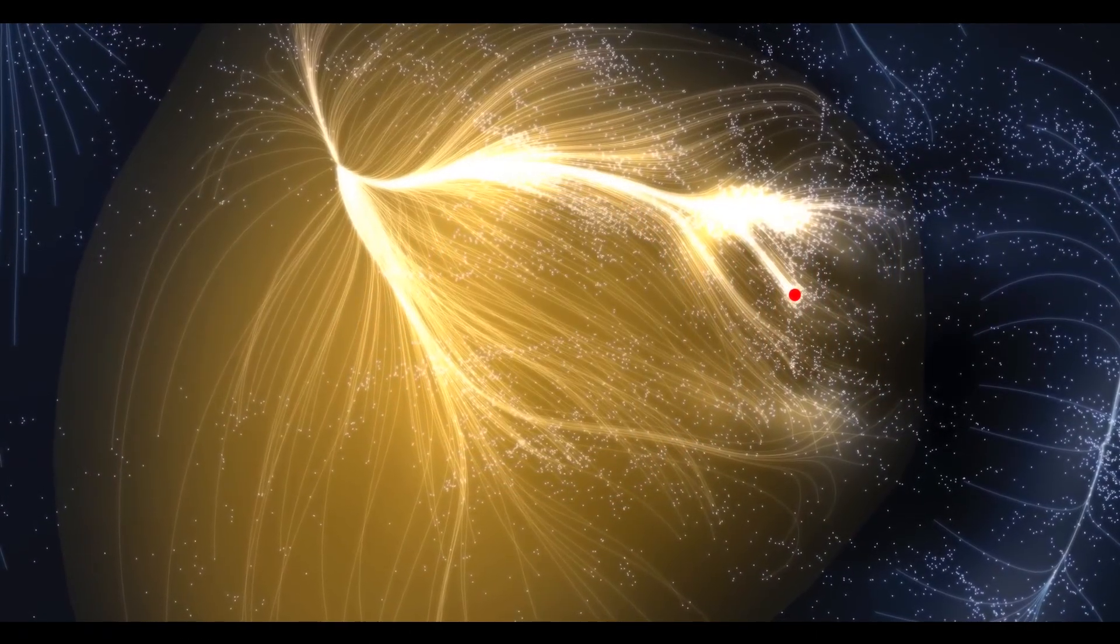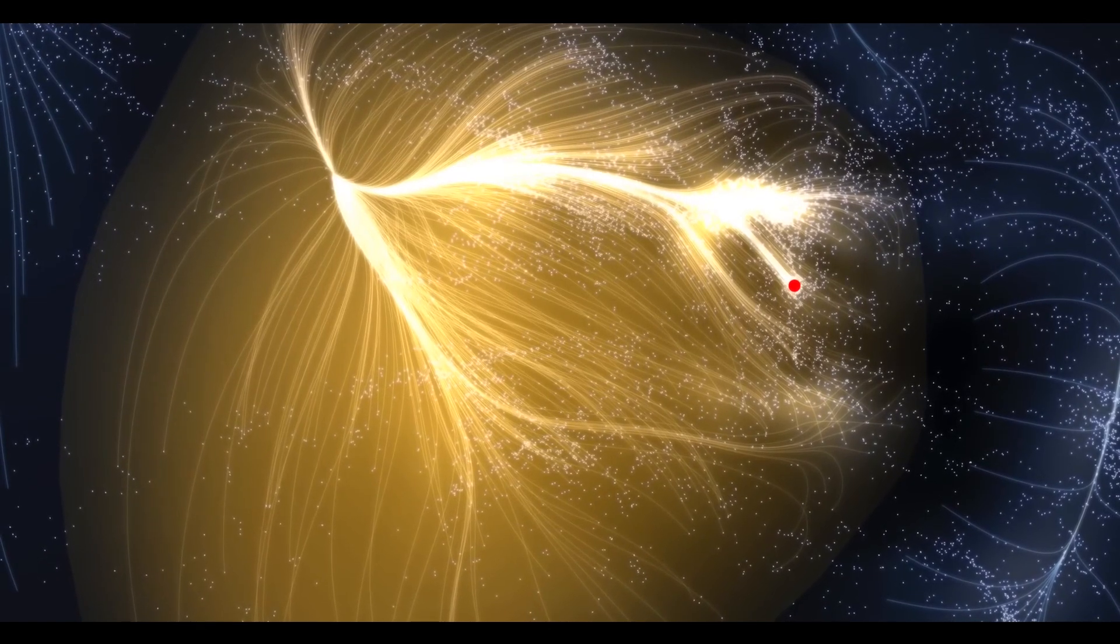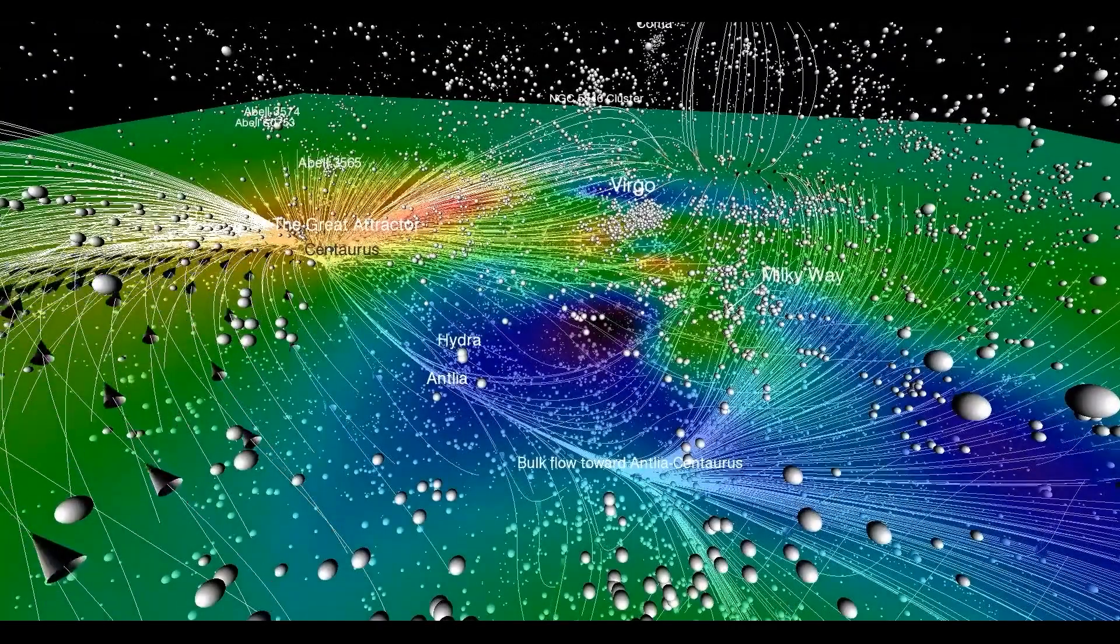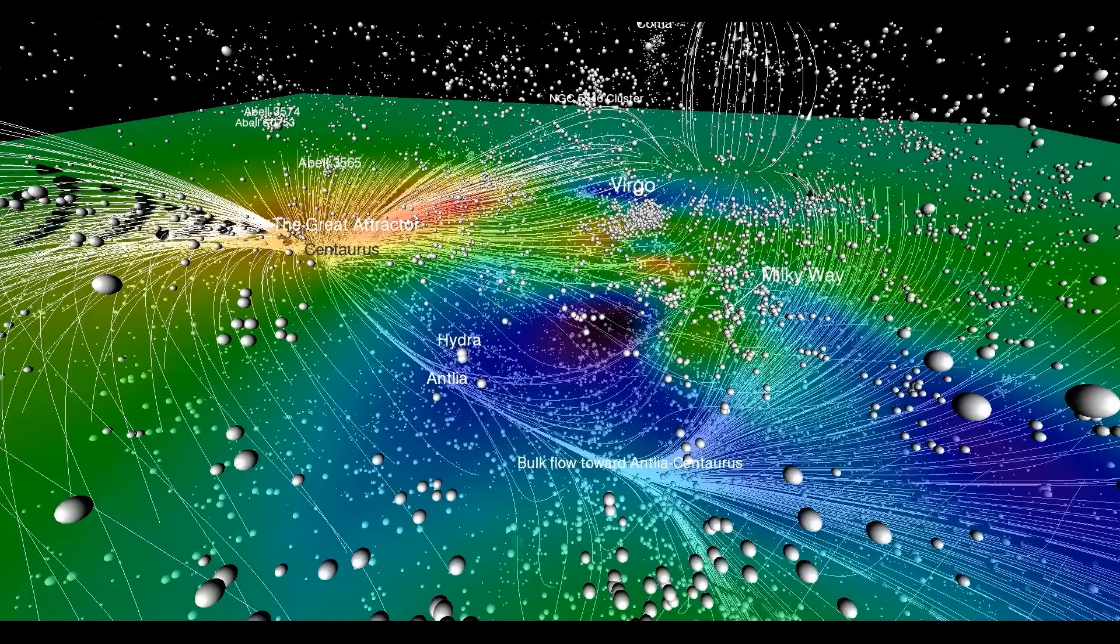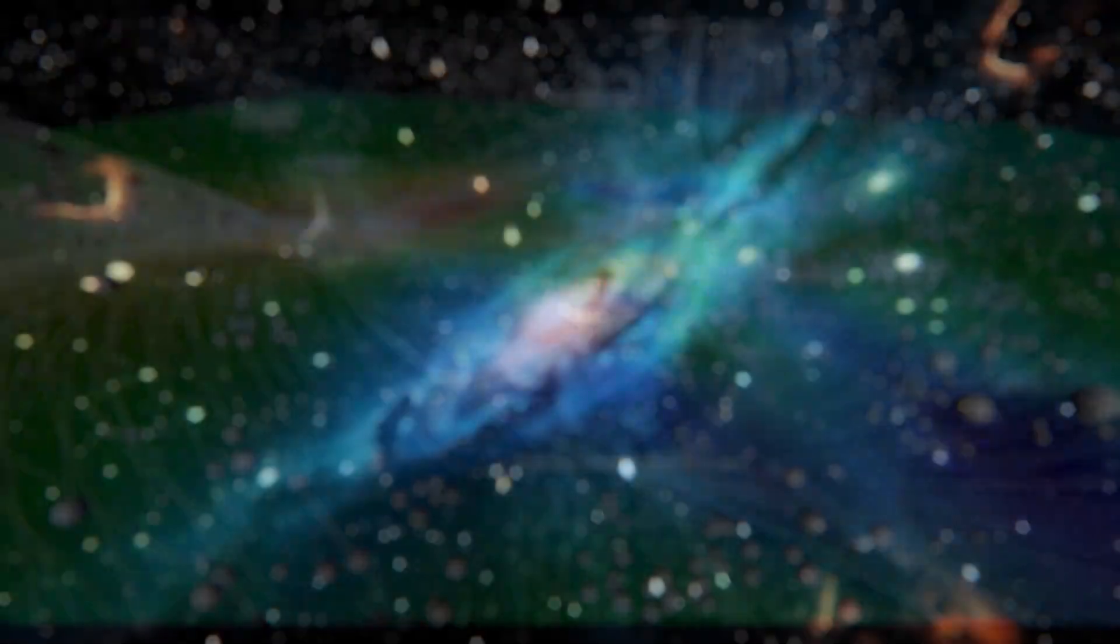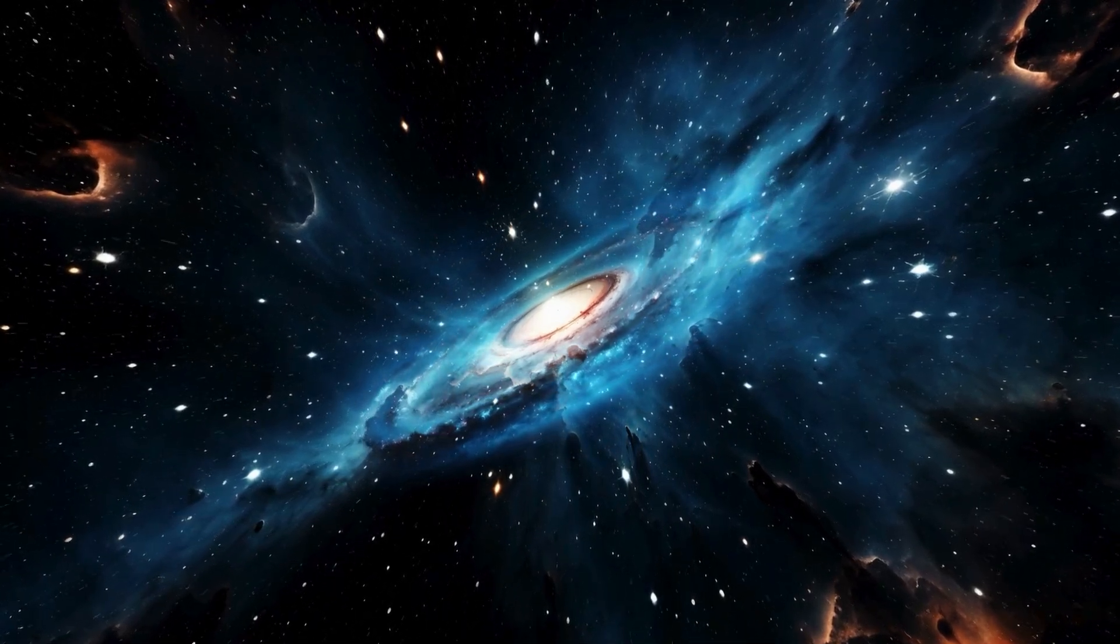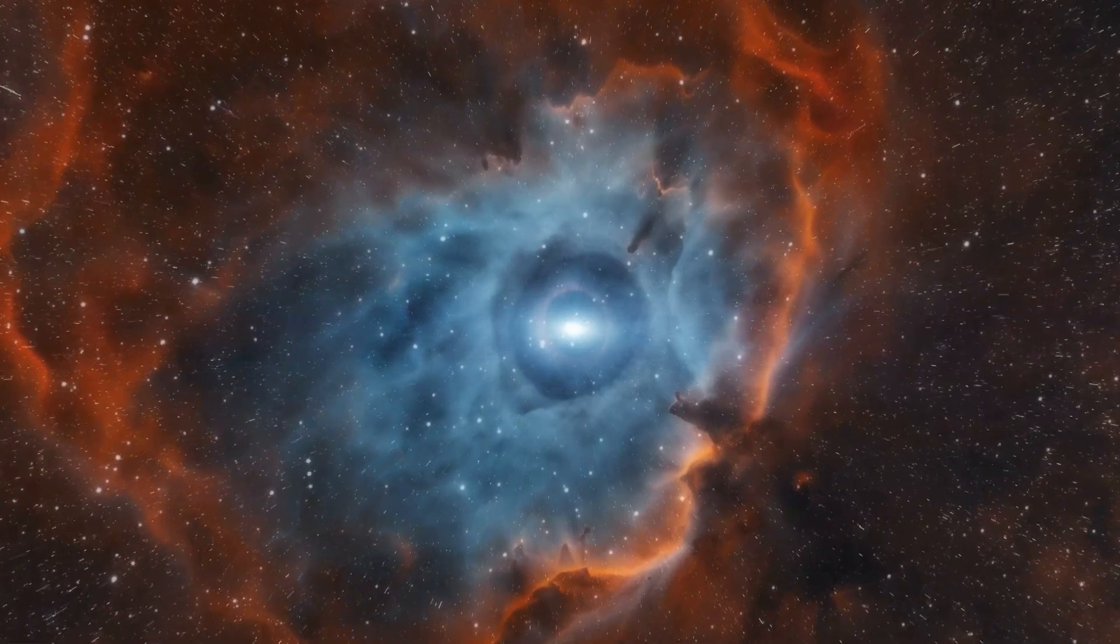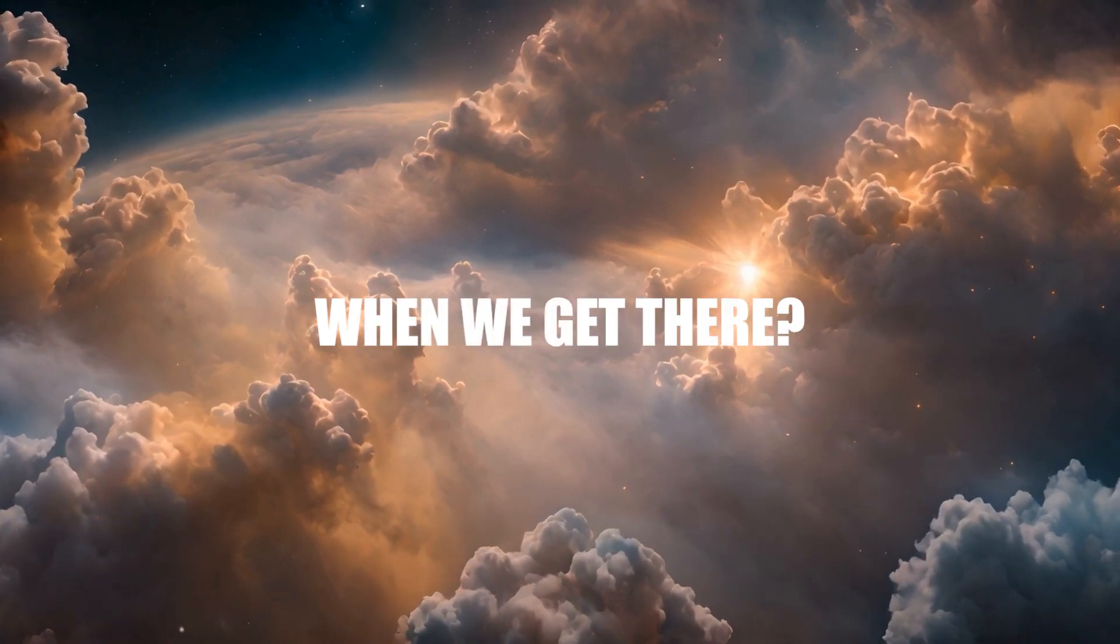The Great Attractor is simply the deepest point on the trampoline in our corner of the universe, the gravitational locus at the heart of a vast cosmic structure that all surrounding galaxies are falling towards. Okay, so we're fairly sure we figured out what the Great Attractor is, but how about the second part of the question I posed at the start of this video? What's going to happen to us when we get there?